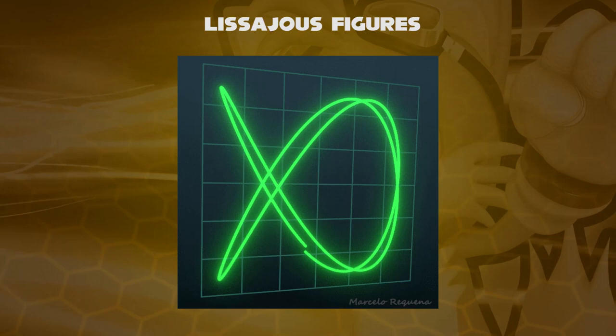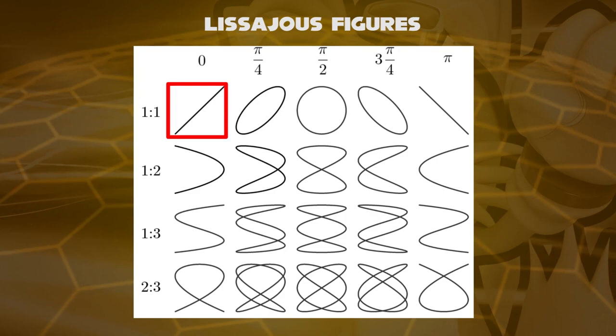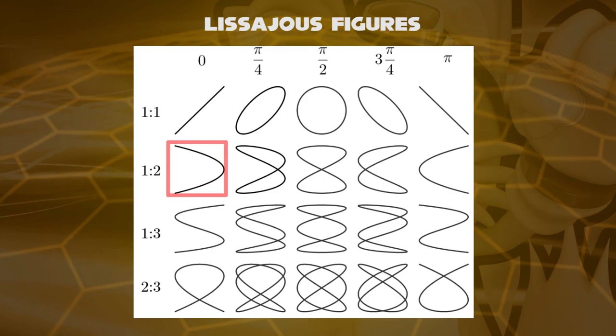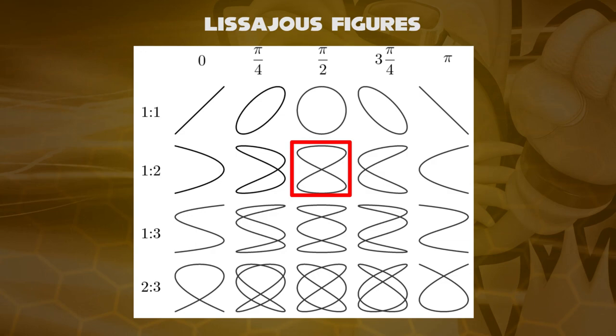At phase difference 0 and equal ratio, this becomes a straight line. If we shift the phase difference to 90 degrees, we get a circle. At phase difference 0 and the ratio set to 1 and 2, we get a parabola curve. At 90 degrees, it becomes a figure-8 curve.